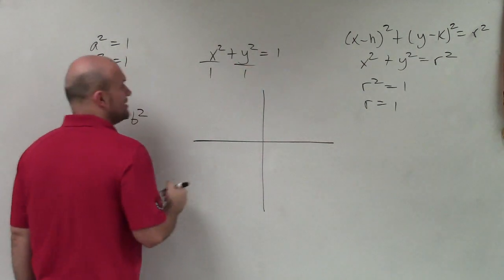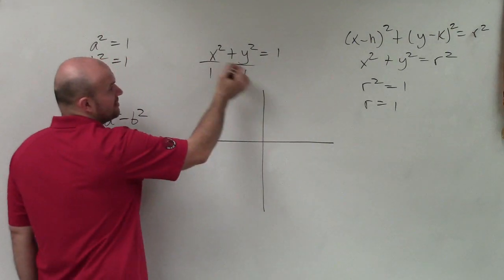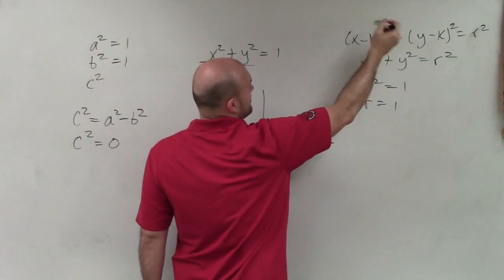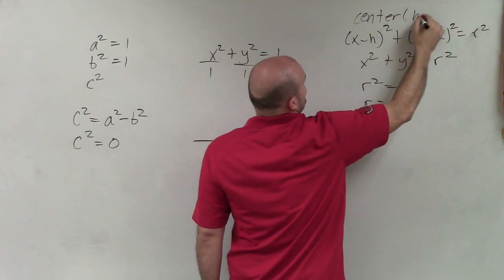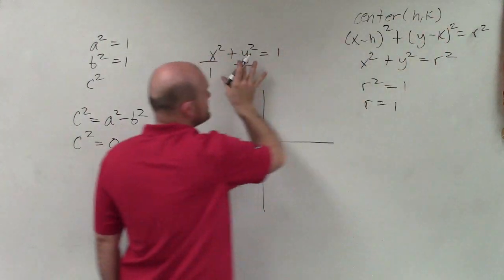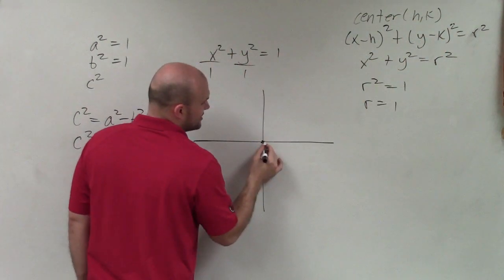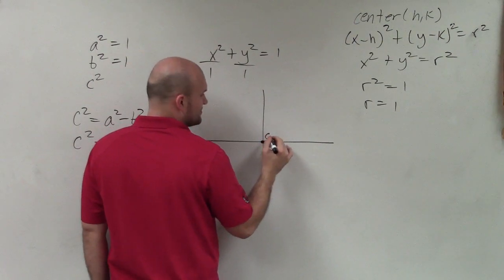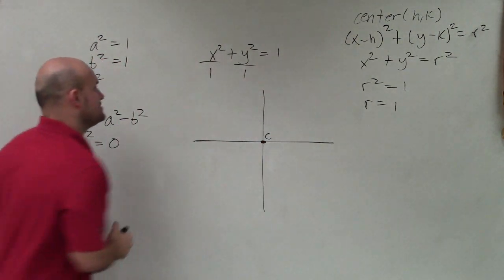All right, so now let's go and plot the center. Now remember, here is it when we have a center at h comma k. In this case, we don't have an h comma k, so our center is at 0, 0. So I'm just going to label that center 0, 0.